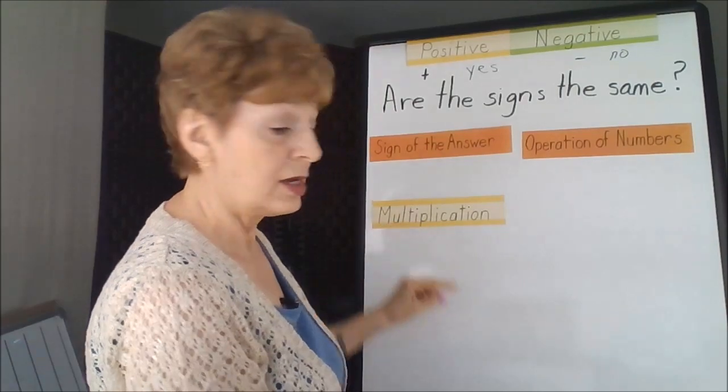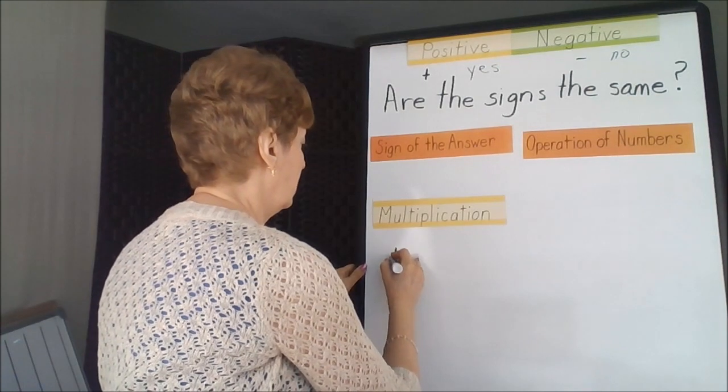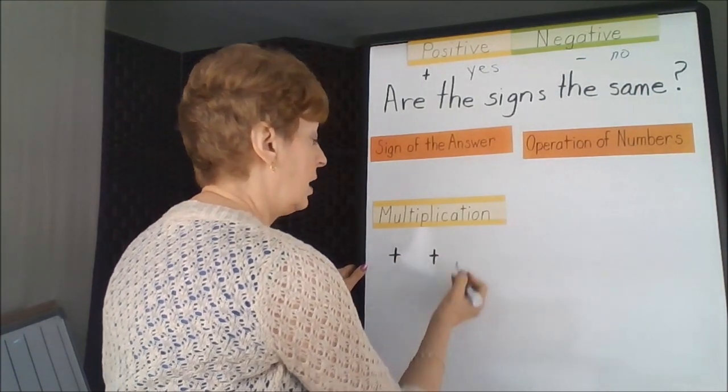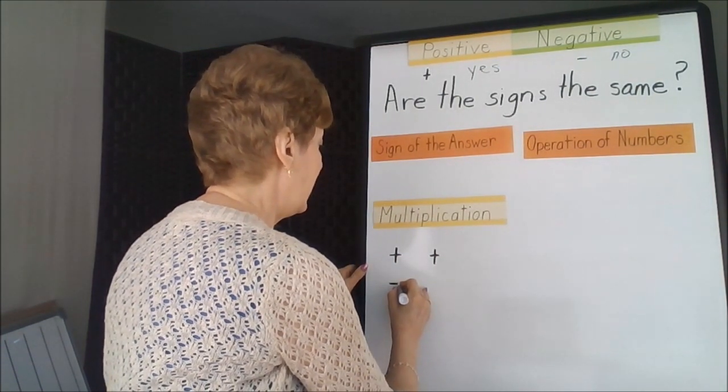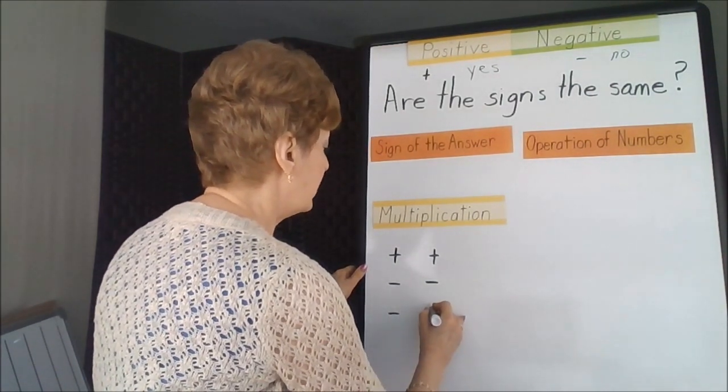In this case, we could have two numbers that are positive, or two numbers that are negative, or we could have one of each.